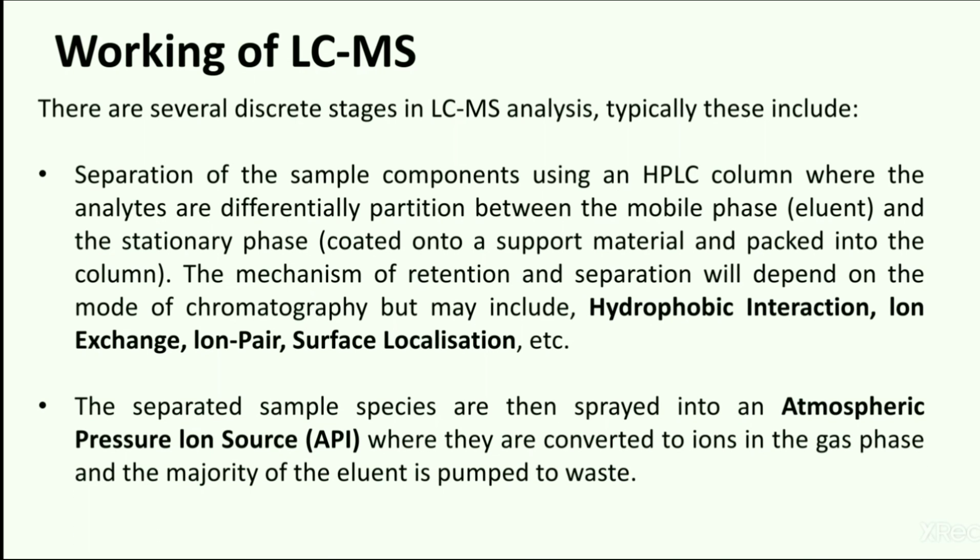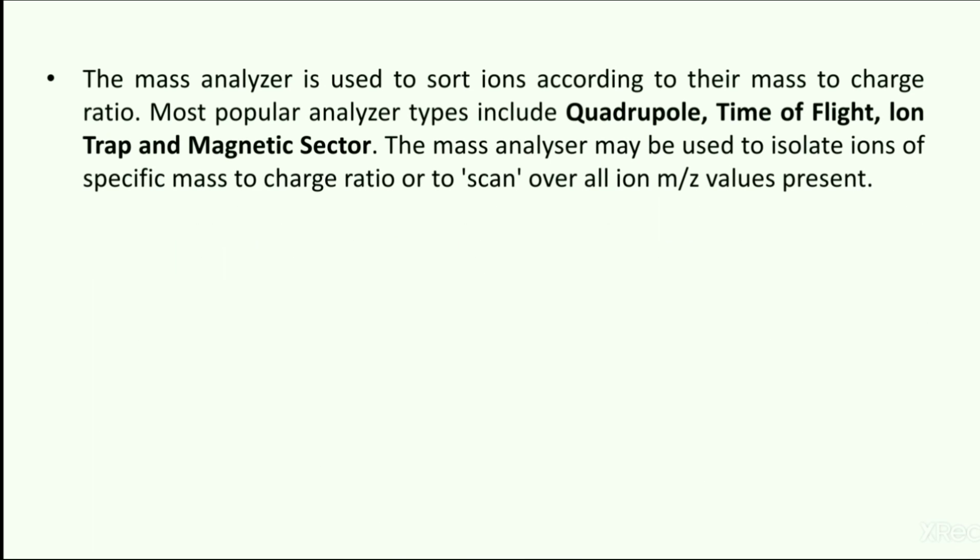Separated analytes are then sprayed into the ion source of the mass assembly, such as the API source, where they are converted to ions in the gas phase. API stands for atmospheric pressure ion source, and the majority of the solvent is pumped to waste. The mass analyzer then sorts ions according to their mass-to-charge ratio, and ions having specific mass-to-charge ratios of analytical importance are selected. Most common analyzers used are quadrupole, time of flight, ion trap, and magnetic sector.